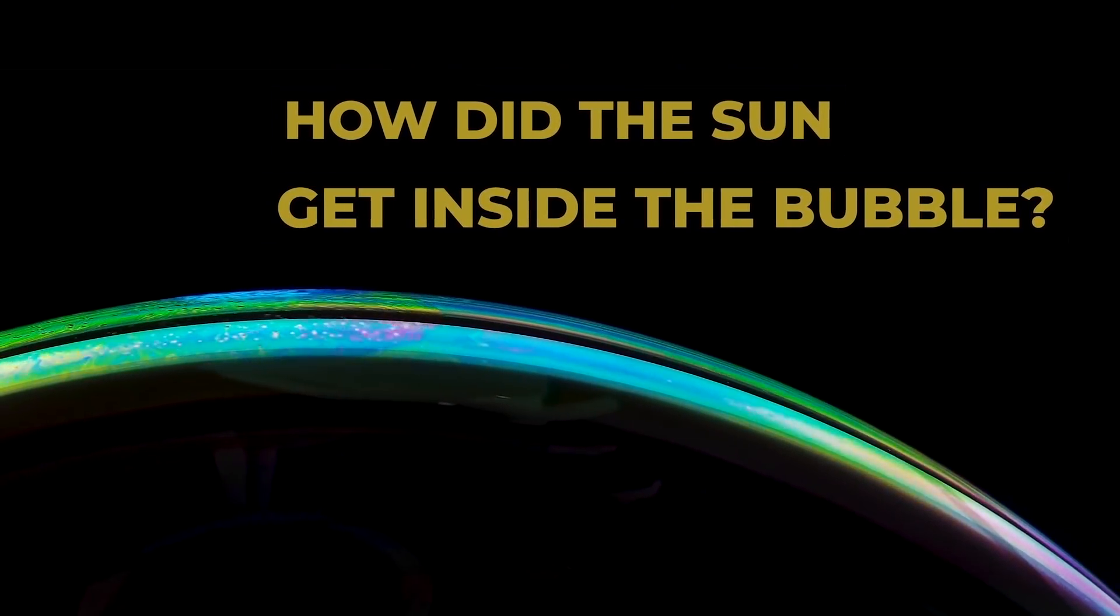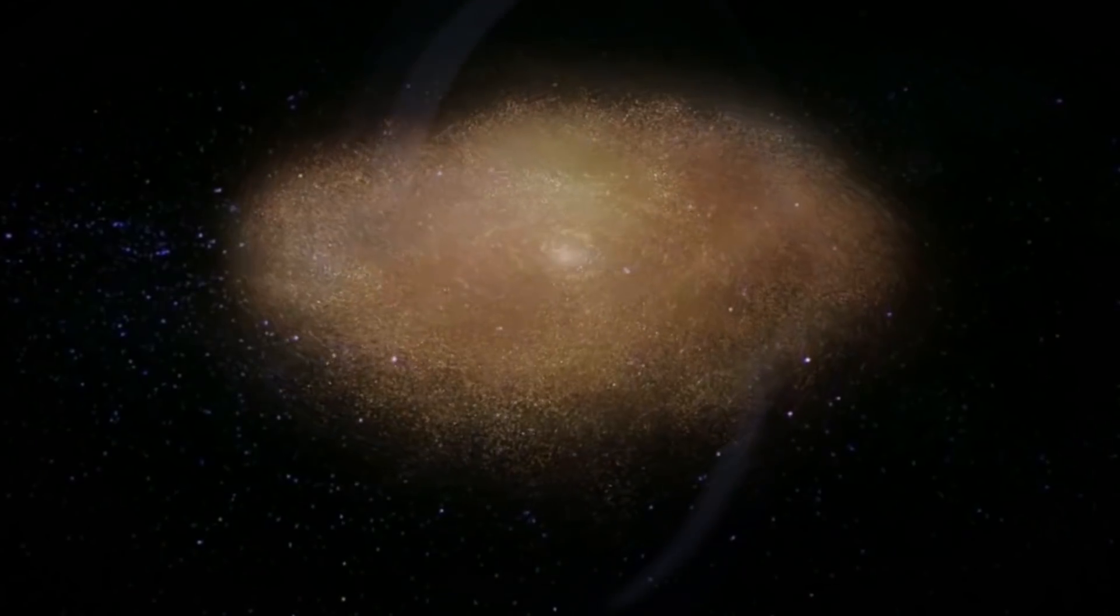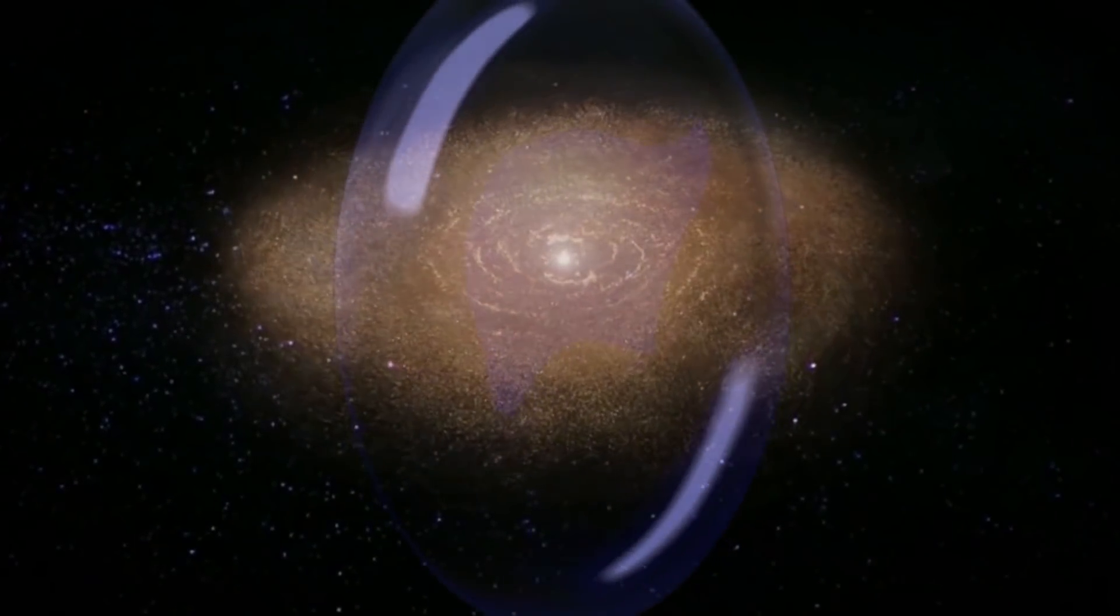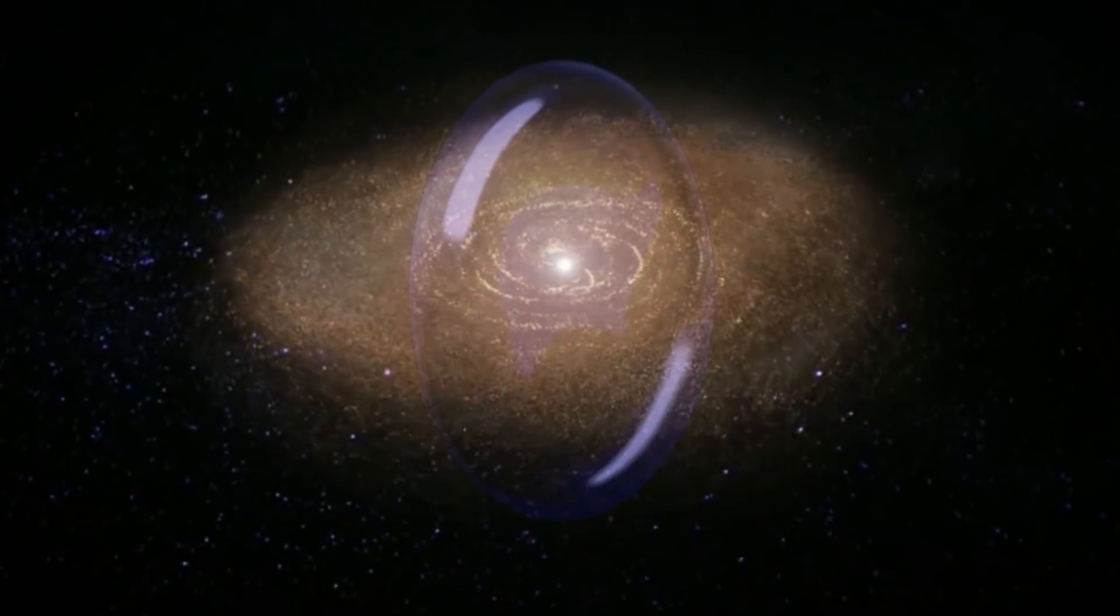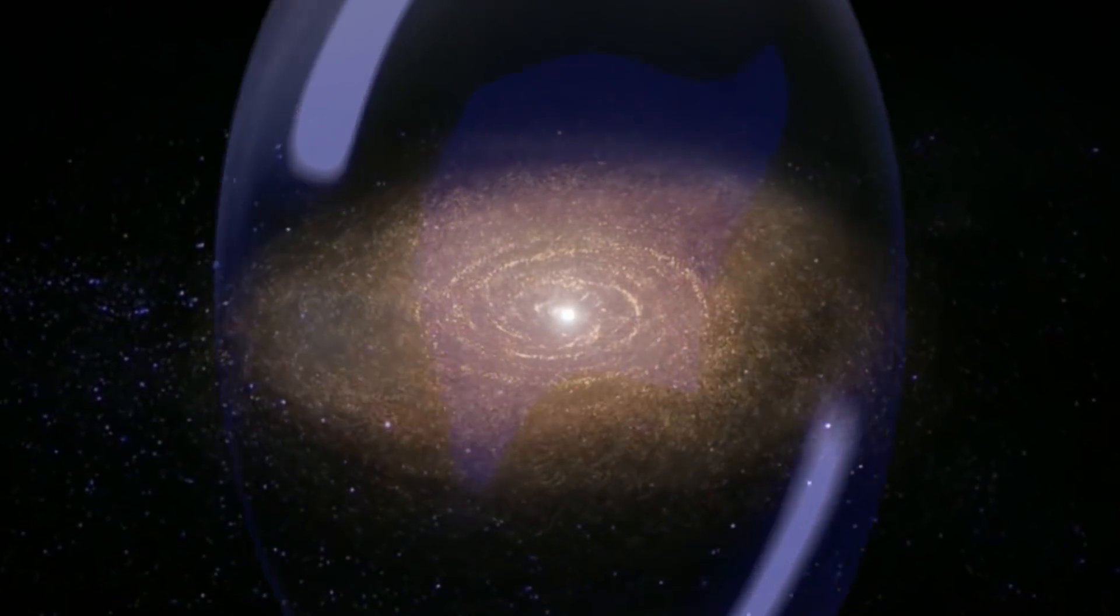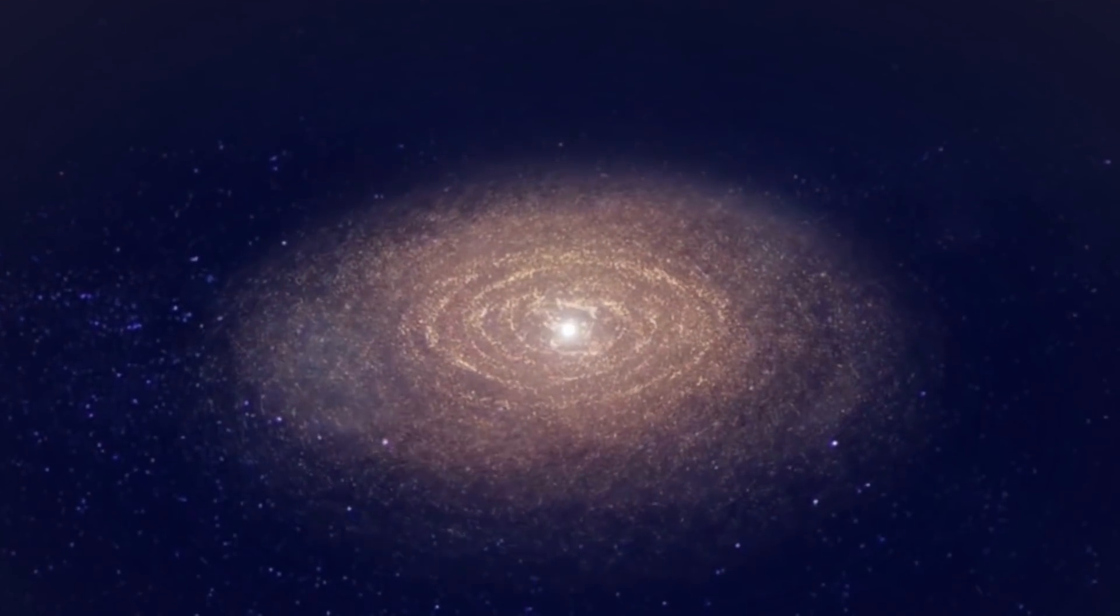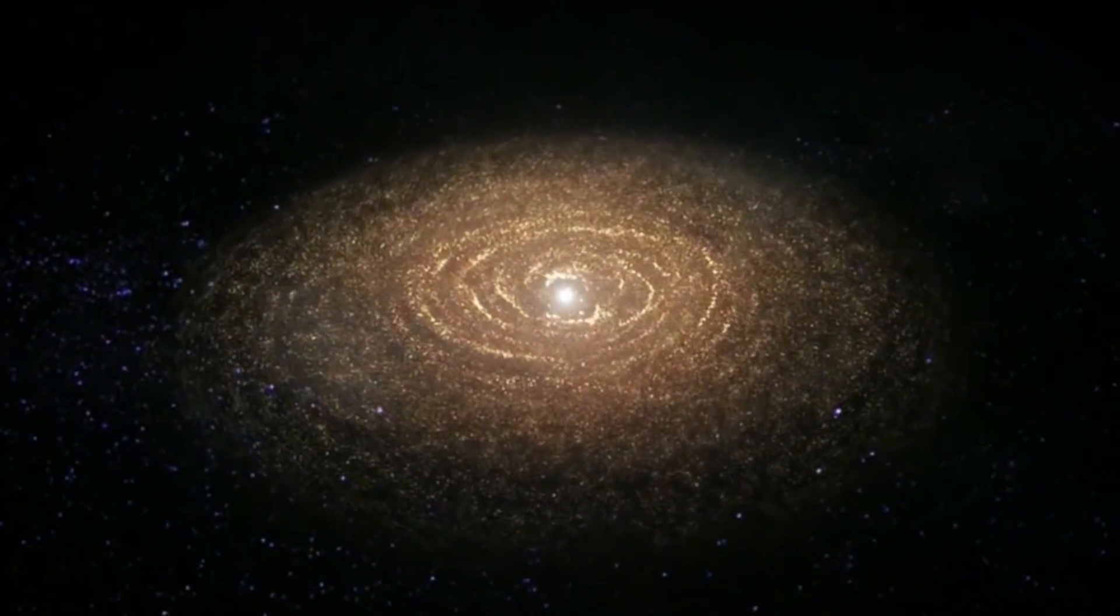How did our Sun get inside the bubble? The only stars within this massive formation either existed before the bubble appeared or formed outside of it and somehow flew through its shell towards the center. The Sun also traveled like this.